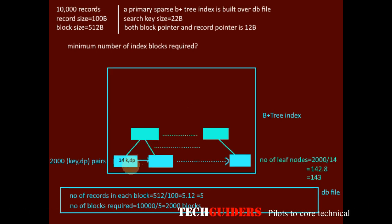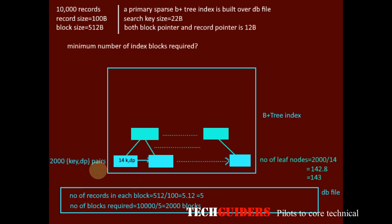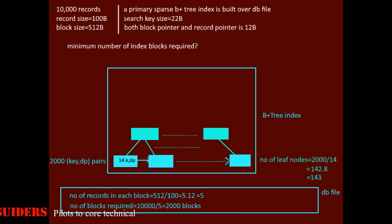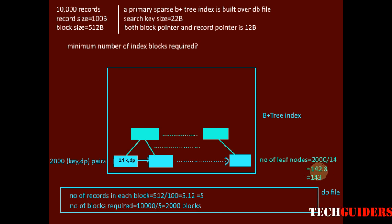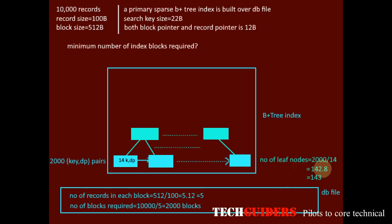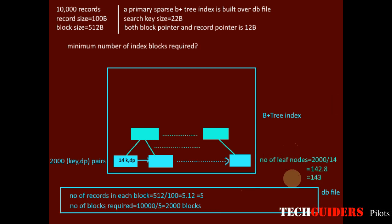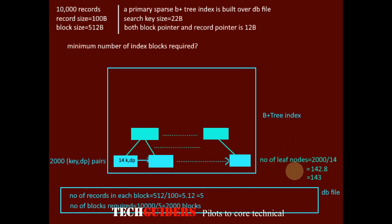Considering each leaf node is maximum occupied with 14 key-data pointer pairs, how many leaf nodes are required to keep 2,000 key-data pointer pairs? We take the ceiling of 2000 divided by 14, which is 142.8. So 142 leaf nodes are not enough — those 142 nodes would be filled to their maximum with no remaining space. One more leaf node is required, giving us 143 leaf nodes. Hence the minimum number of leaf nodes required at the first level is 143.